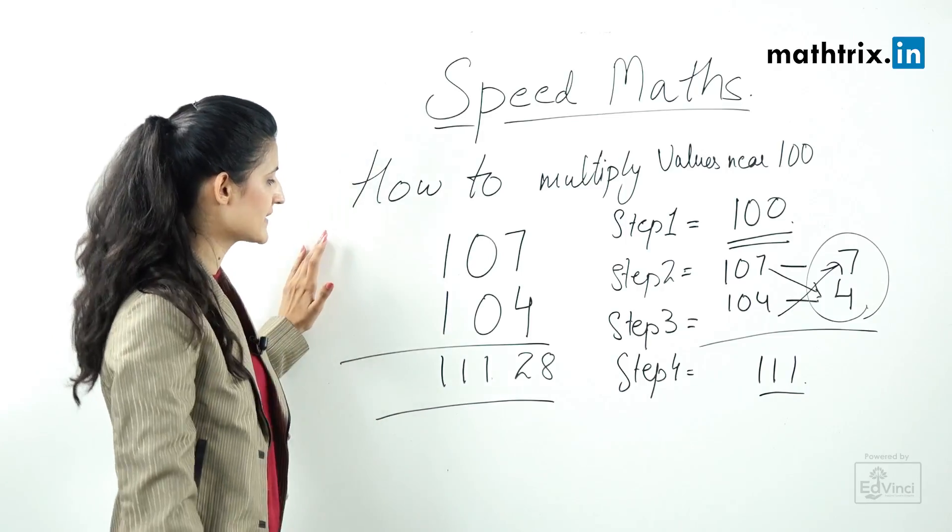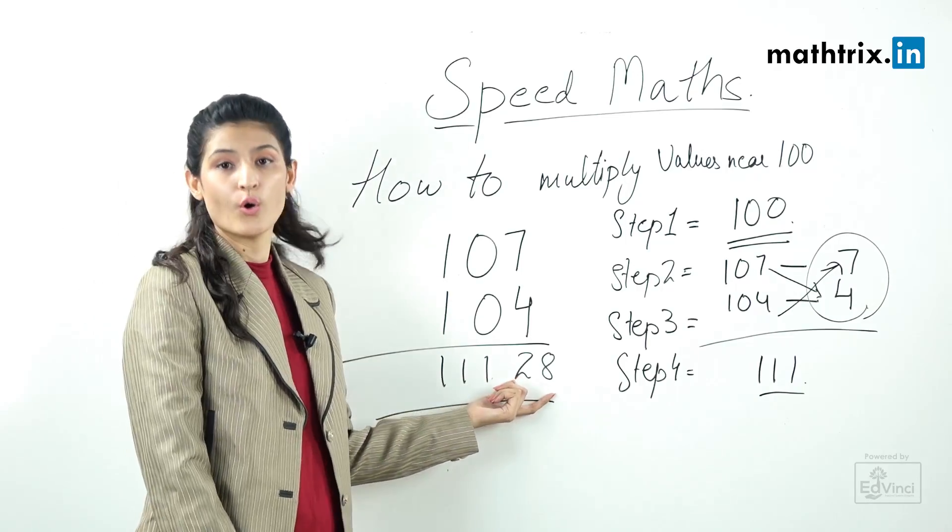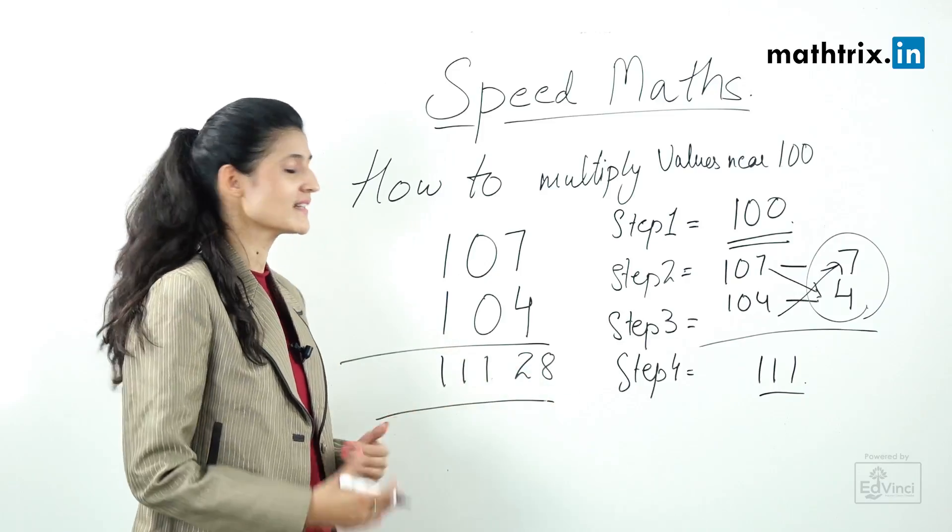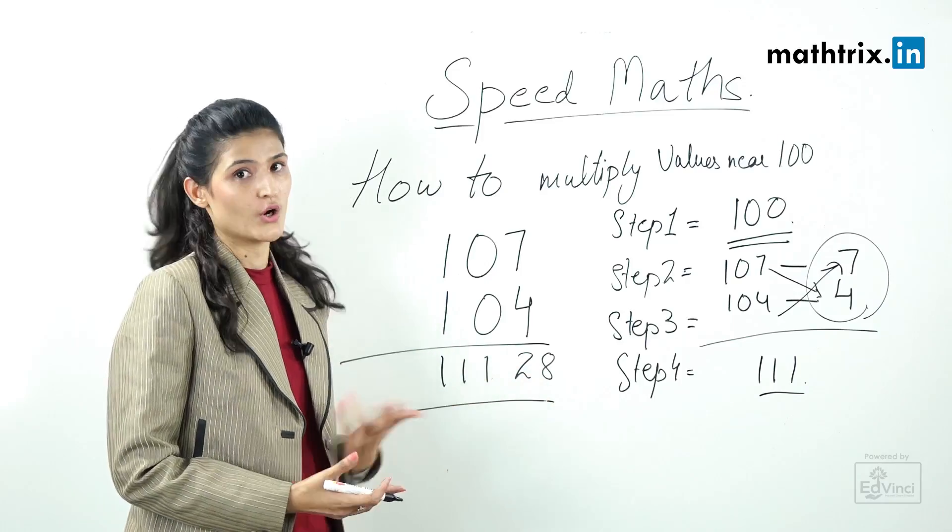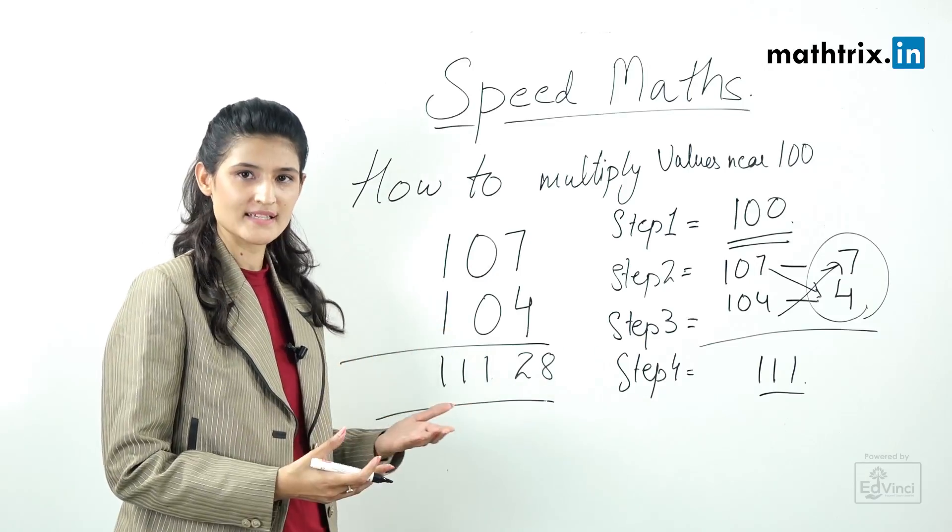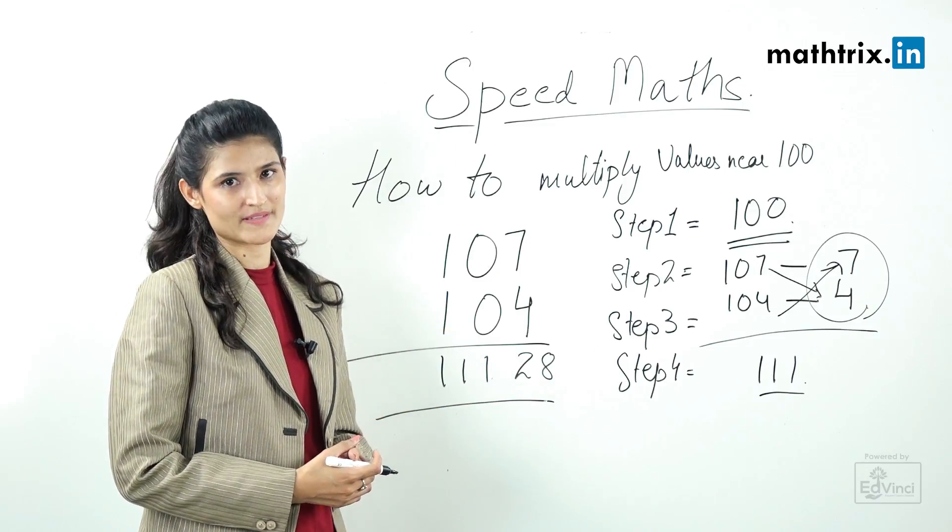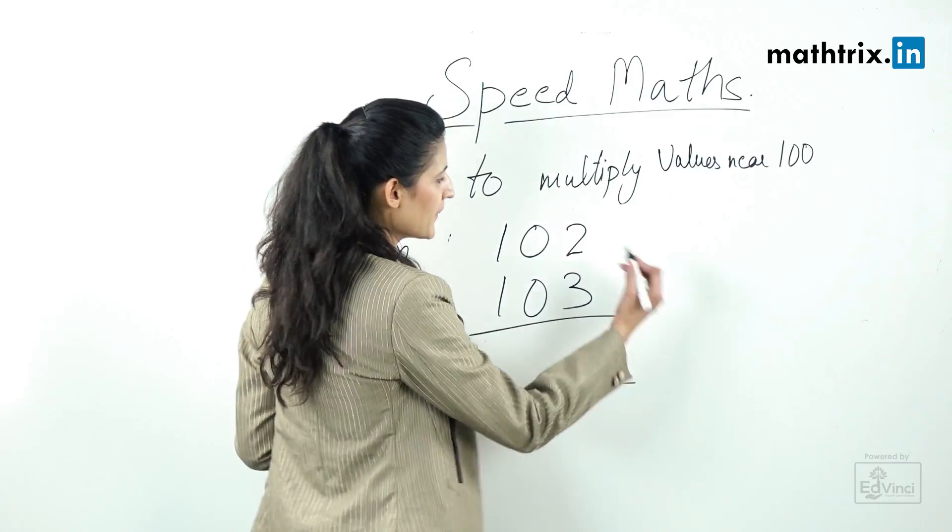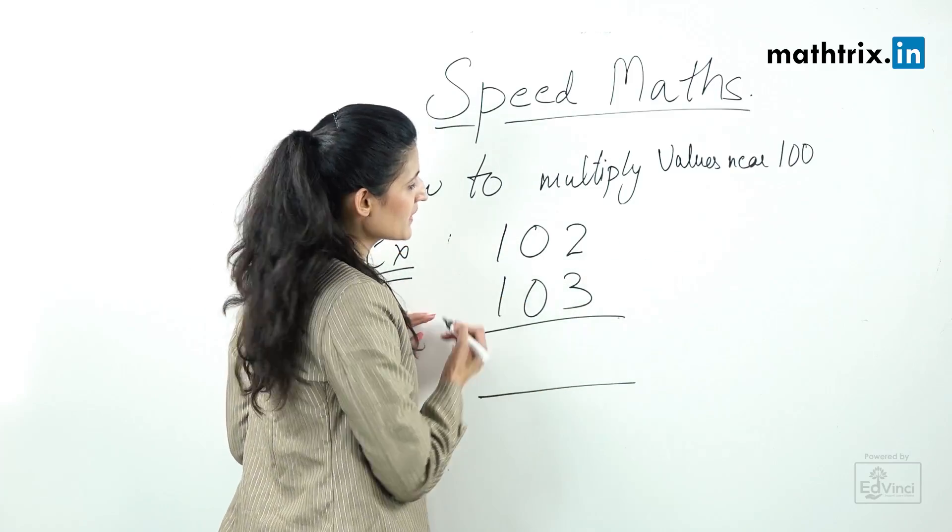This is one example where our digits are already 2 digits, but you can get some questions where digits are even 1 digit or 3 digits. We'll move on to the next example. Step number 1, our base is 100.